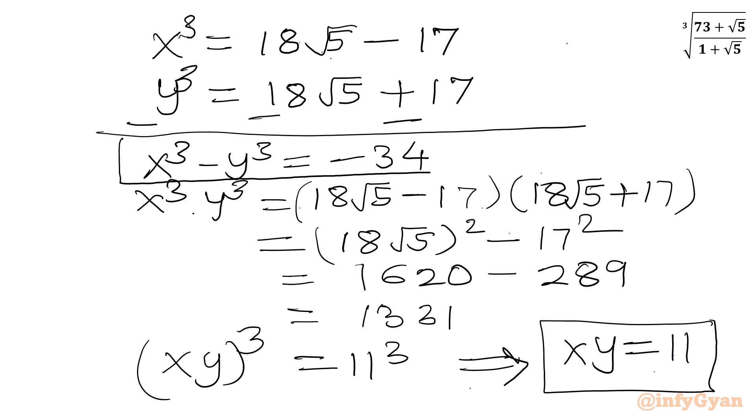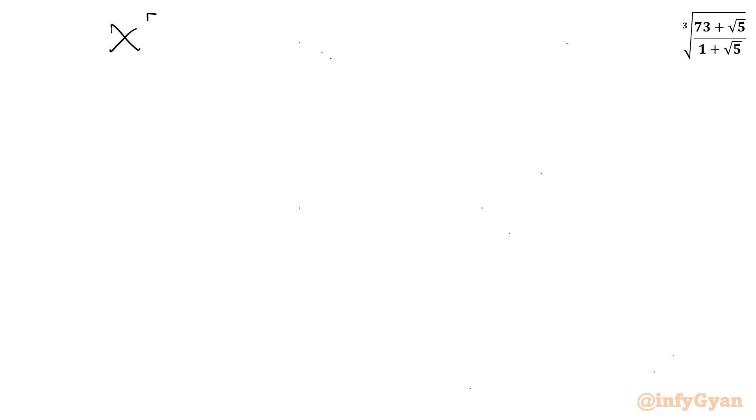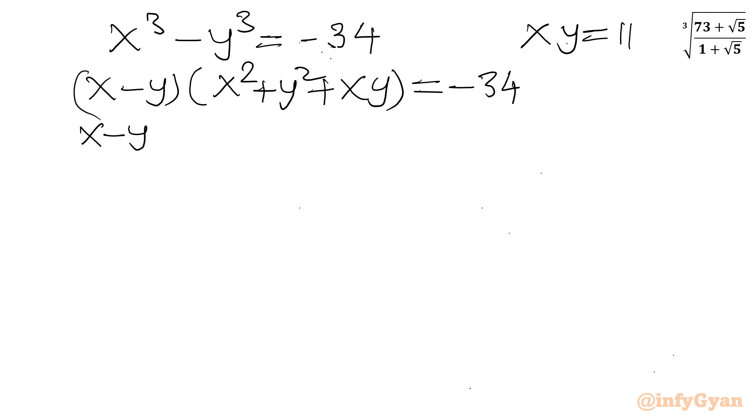Now I will use x cube minus y cube equal to minus 34 and xy equal to 11. Let me write x cube minus y cube equal to minus 34. And xy equal to 11. Using a cube minus b cube formula, so I can write x minus y times, in the other bracket, x square plus y square plus xy. And right hand side minus 34. Further I can write x minus y as it is. Here I can write x square plus y square as x minus y whole square, and then I need to write plus 3xy, equal to minus 34.